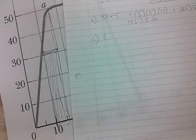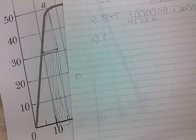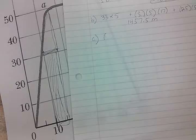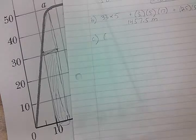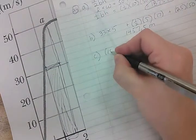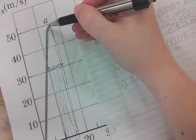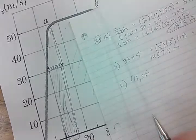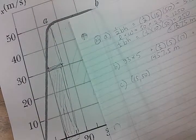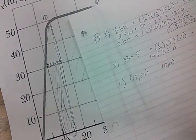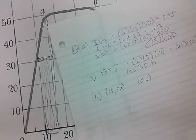Again, we know that one point happens at 15, 50, so that would be that point right here. And then another happens at 0, 0, so we can just find the slope of that line.